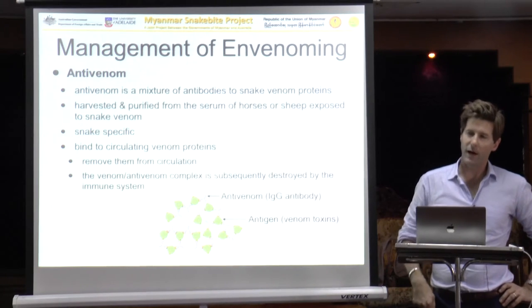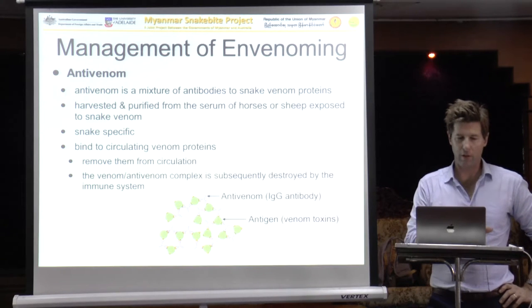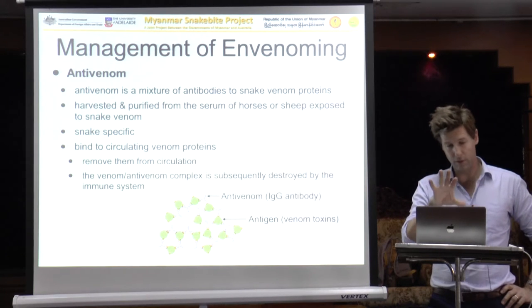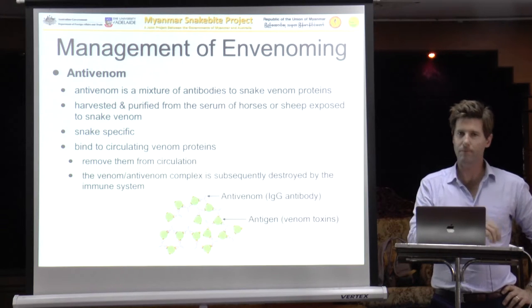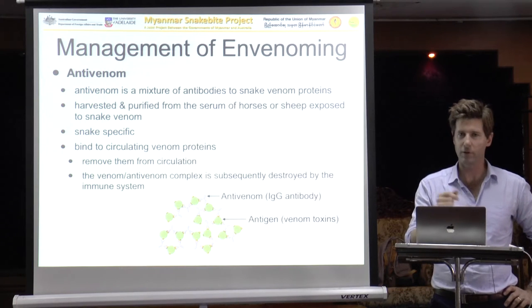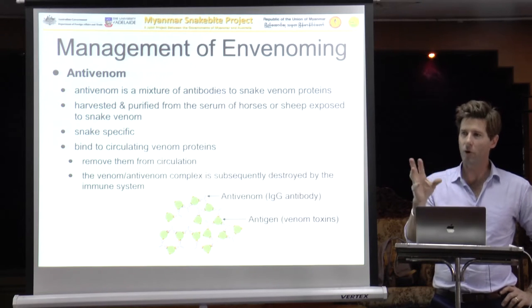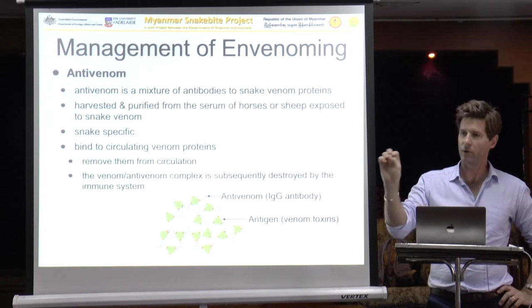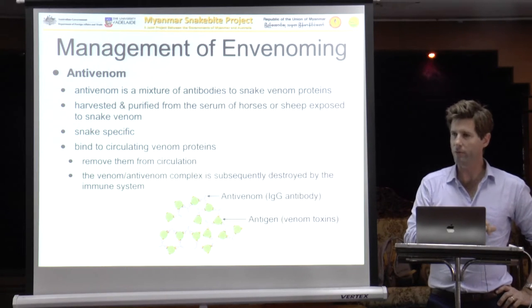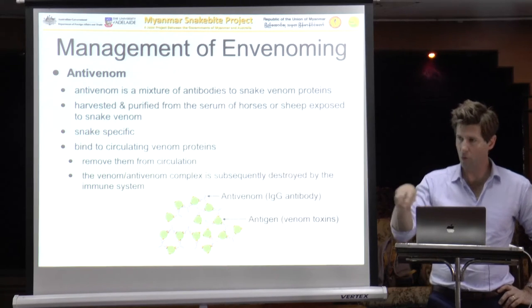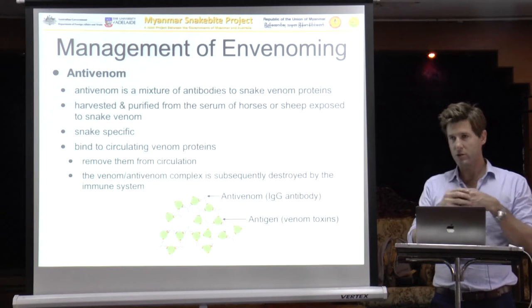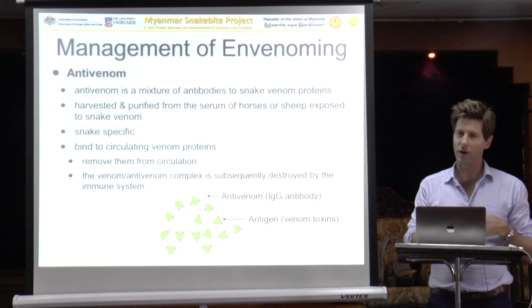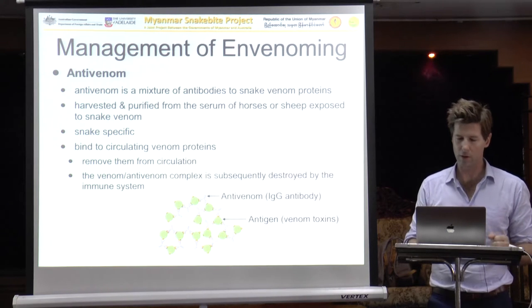Professor White will give another talk on antivenom after this, so I won't dwell on it. Briefly, antivenom is a mixture of antibodies to snake venom proteins, harvested usually from horses or sometimes sheep, following exposure to a snake venom. They are snake-specific — antivenom to cobra will not work for Russell's Viper and vice versa. Similarly, where the venom comes from probably matters: a Russell's Viper venom from India used to immunise a horse will not necessarily work well for a Russell's Viper bite in your country, and this may also apply regionally within the country. Antivenom binds to venom proteins, and those complexes are then destroyed by phagocytes and the reticuloendothelial system.